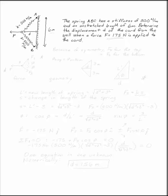The spring ABC, going all the way from the top to the bottom, has a stiffness of 500 newton meters and an unstretched length of 6 meters. Determine the displacement D of the cord from the wall when the force F equals 175 newtons is applied to the cord.